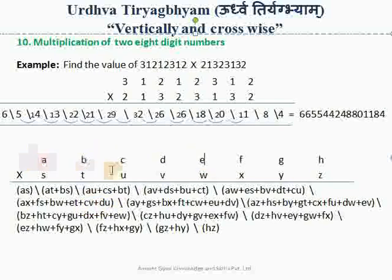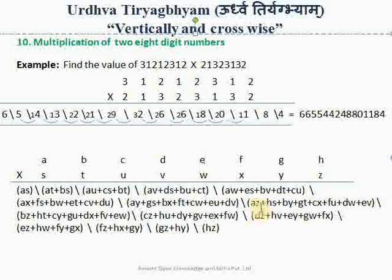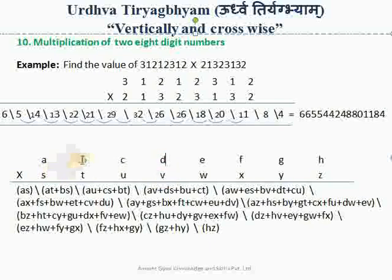In the next step, we consider five columns from the left: A into W plus E into S plus B into V plus D into T plus C into U. Then we consider the first four columns from A to D: A into V plus D into S plus B into U plus C into T.